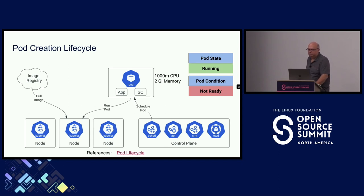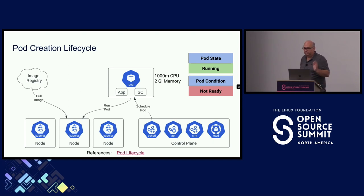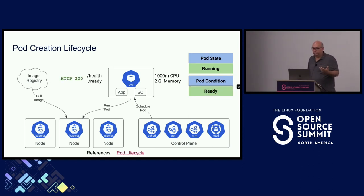The kubelet transitions the pod to creating state, pulls the images for all the containers from the image registry, and runs the pod using the container runtime — either containerd, Docker, or something like that. Now the pod is running, but it's still in not-ready state. The app still needs to load libraries, download configuration, establish database connections, or do other startup operations. The application code is responsible for responding to the readiness endpoint with 200 OK once it's ready to accept incoming requests. There are also lifecycle hooks you can use to customize the pod lifecycle.